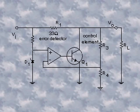In this lesson, we will discuss op-amp shunt regulators. In the basic op-amp shunt regulator, the control element is a transistor Q1 in parallel with the load, as shown in the figure.